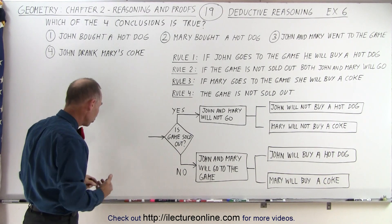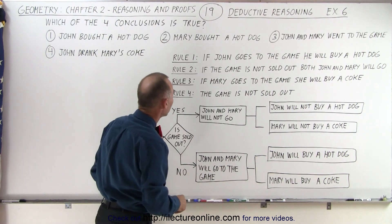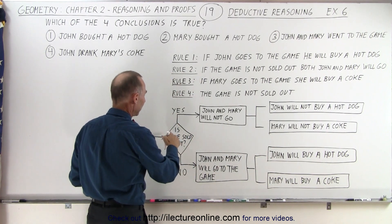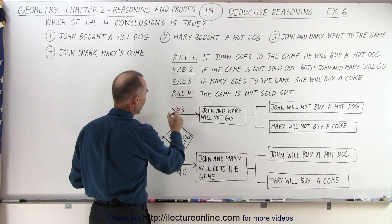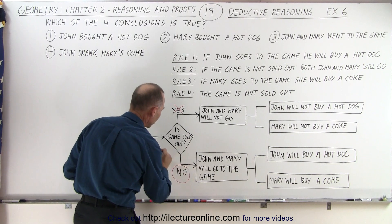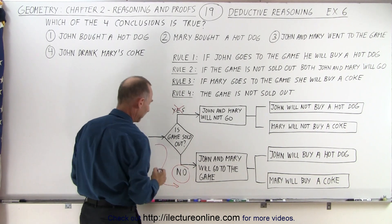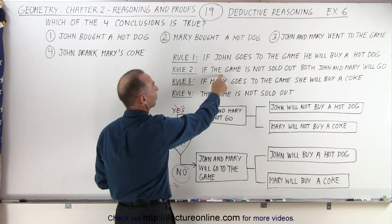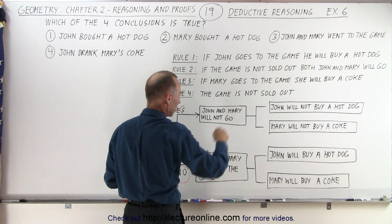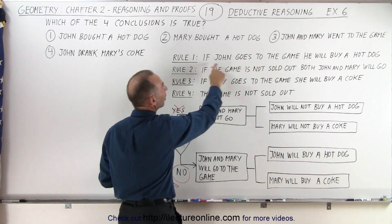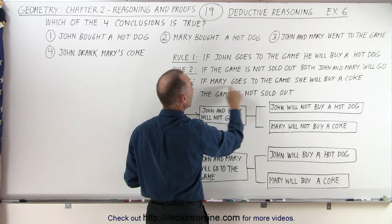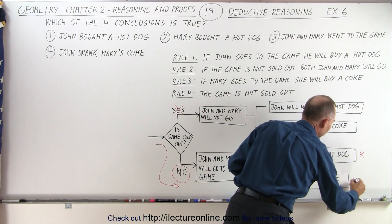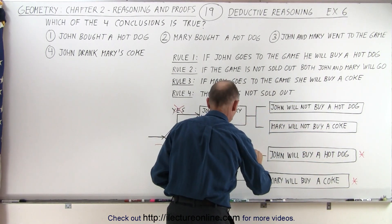Let's see which way we should go in the flow chart. The game is not sold out, so when we ask 'is the game sold out?' — yes is not correct, no is correct, which means we take the bottom path. The logic conclusion is that John and Mary will go to the game. If the game is not sold out, both John and Mary will go, and if John goes to the game, he will buy a hot dog; if Mary goes to the game, she will buy a Coke. So these are all true statements.